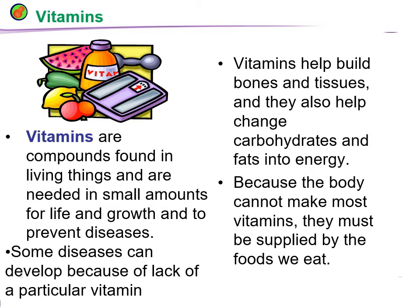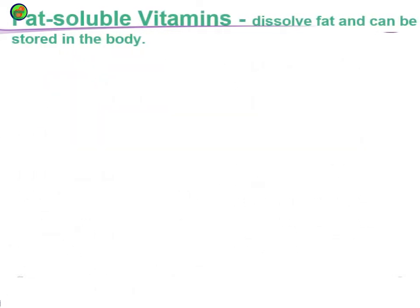If you have a deficiency of vitamin D, your bones start to weaken. Vitamins help build bones and tissues and they also help change carbohydrates and fats into energy. Because the body cannot make most vitamins, you need to eat foods rich in them — for example, citrus fruits provide vitamin C, and carrots provide vitamin A.